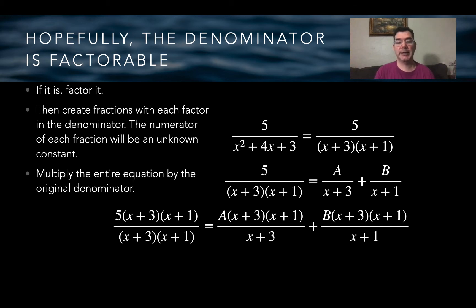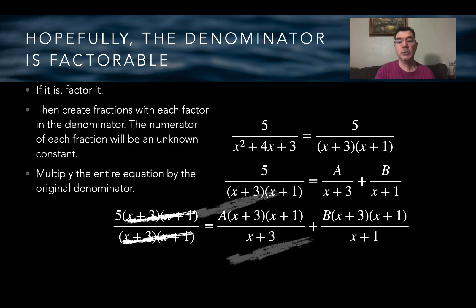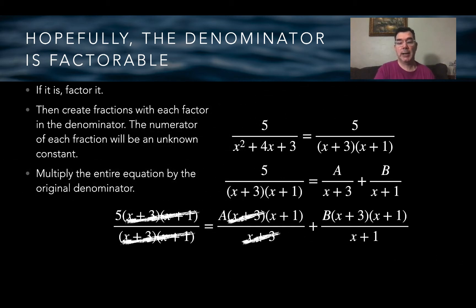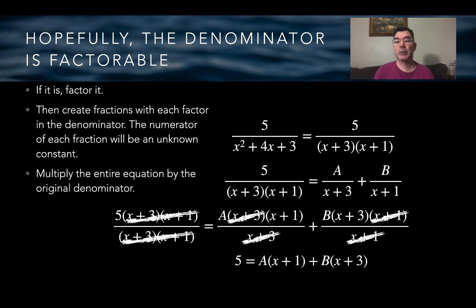Every factor in the numerator that is in parentheses cancels with every factor in the denominator. So on the left-hand side I'm left with just 5. On the right-hand side, the x plus 3 factors divide out in the first fraction, and the x plus 1 factors divide out in the last fraction. Now I have no denominators in my equation, making it much easier to solve.